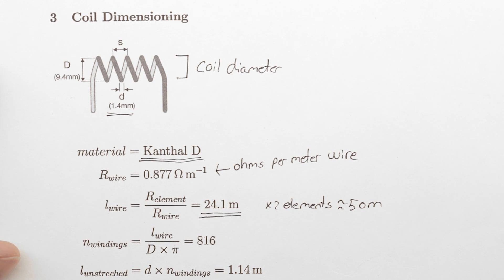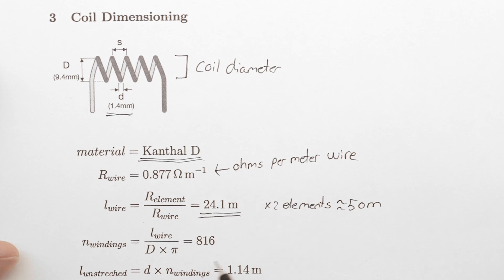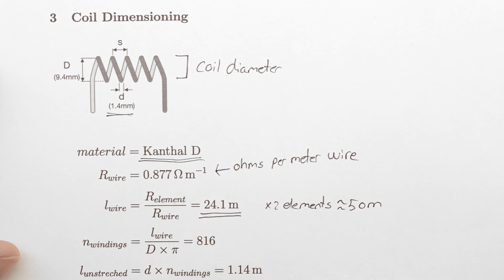Now we can determine the number of coil windings by dividing the wire length with the estimated circumference of each winding. The diameter D I am using for these calculations is the inner diameter plus the wire thickness. This gives us 116 windings which results in a 1.1 meter coil when not stretched.